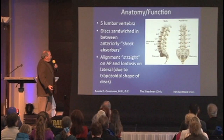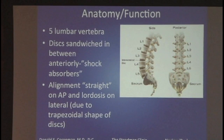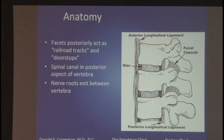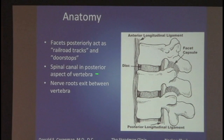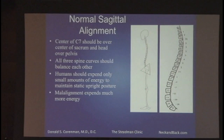We have five lumbar vertebrae. The discs are sandwiched in between anteriorly — these are the shock absorbers. The front-to-back view of the spine is nice and straight, and on the side you have a curve due to the trapezoidal nature of the discs. If you piled the vertebrae one on top of another without the discs, you'd have a column with no curve. The facets in back are important because they are like railroad tracks — they guide motion of the spine in only certain directions. The spinal canal is in the back of the spine, and the nerve roots exit there.